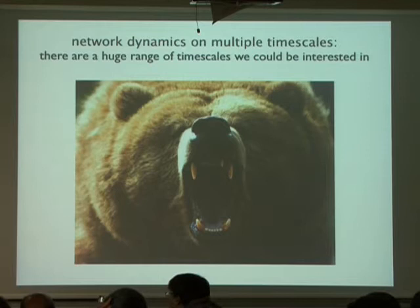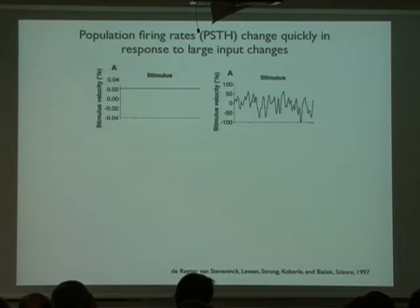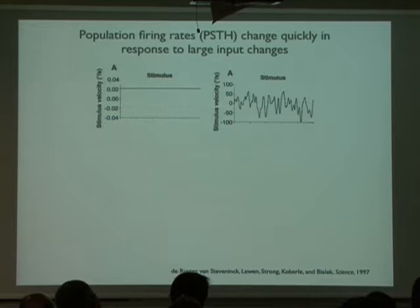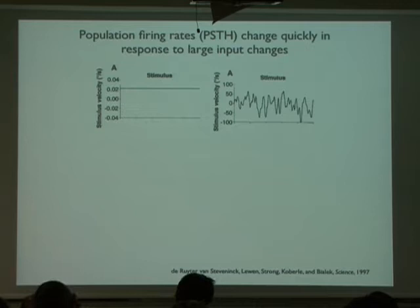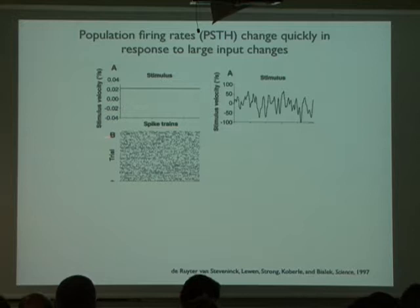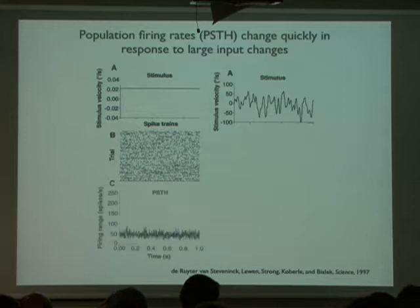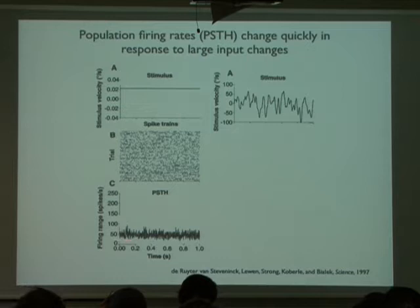Firing rates can actually change on a much quicker timescale. To illustrate that point I chose an example from an old paper from Bill Bialek's group, where they're interested in the stimulus response of the H1 neuron in the fly. They asked: if we present a stimulus that's either constant or rapidly changing to this one neuron, what does this neuron do on average? Let's consider the constant stimulus case first — no noise — and look at how this one neuron responds over many trials.